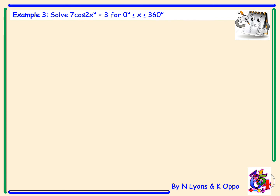Example 3: solve 7cos(2x) equals 3 for x between 0 and 360 degrees. The first step is to make cos(2x) the subject by dividing by 7, giving cos(2x) equals 3 over 7. This is different from previous examples — with 1x there is one wave giving 2 angles, but with 2x there are 2 waves between 0 and 360, so there will be 4 angles where cos(2x) equals 3 over 7.